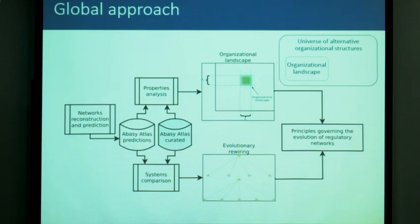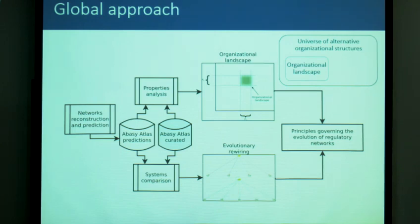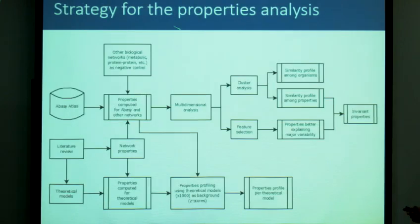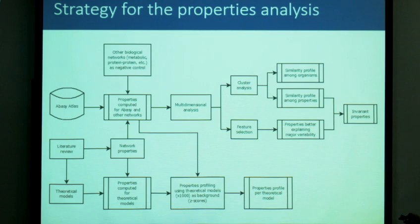We also want to compare different systems in different organisms to identify, for example, how in one system the maltose catabolic process is controlled by an activator and in another by a repressor. The objective is to obtain principles governing the evolution of regulatory networks. The strategy for properties analysis is to compute different properties for regulatory and other metabolic and protein-protein networks, do a multi-dimensional analysis, and identify invariant properties, similarity properties among organisms, and properties that explain the major variability.